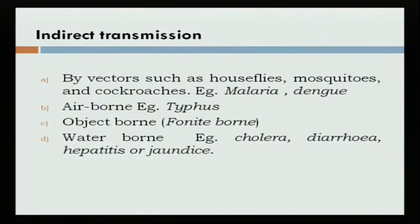In air-borne transmission there is typhus. In object-borne transmission, there are some examples as well. Water-borne indirect transmission includes diseases like cholera, diarrhea, hepatitis and jaundice.